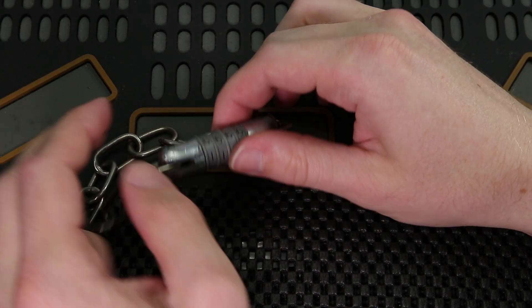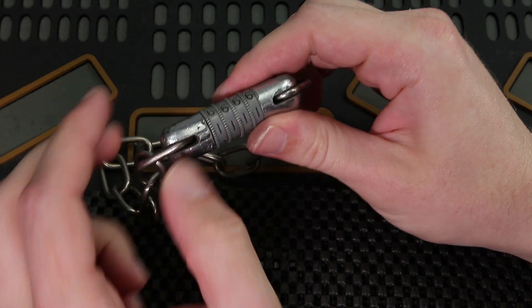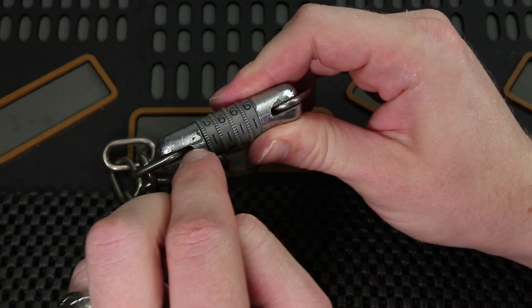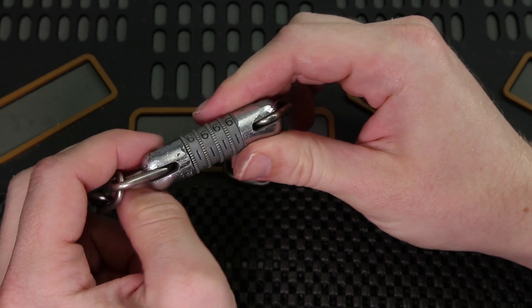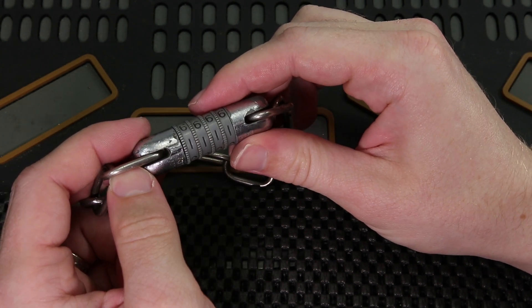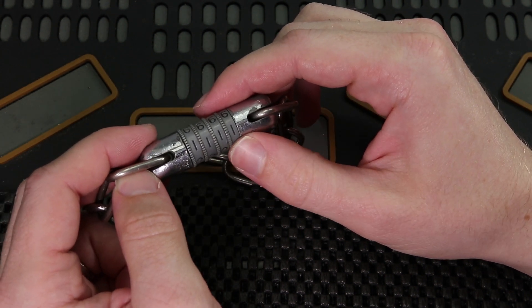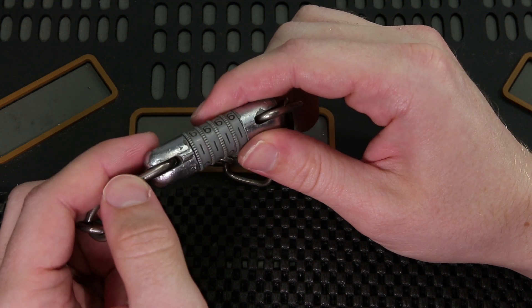Alright, so let's see what it takes to decode this little lock here. What I've done is I've made it 1, 1, 1, 1 going across. You can see the little indicator right here. I don't decode a lot of locks but I do understand the basic principles, so we're going to see what it takes to get this one open.